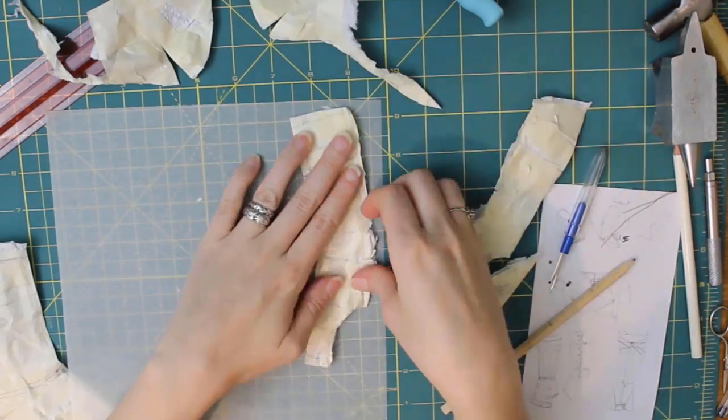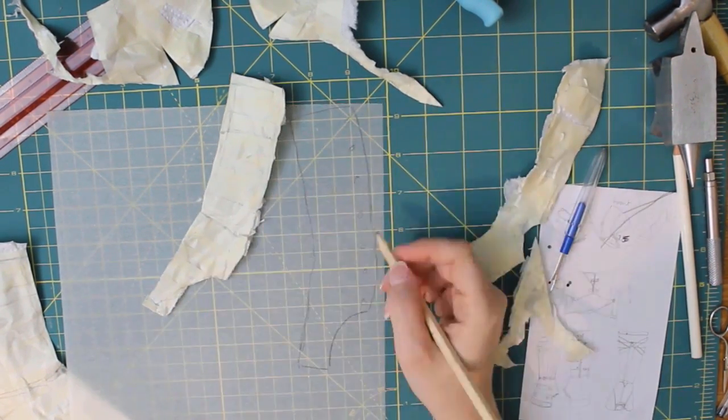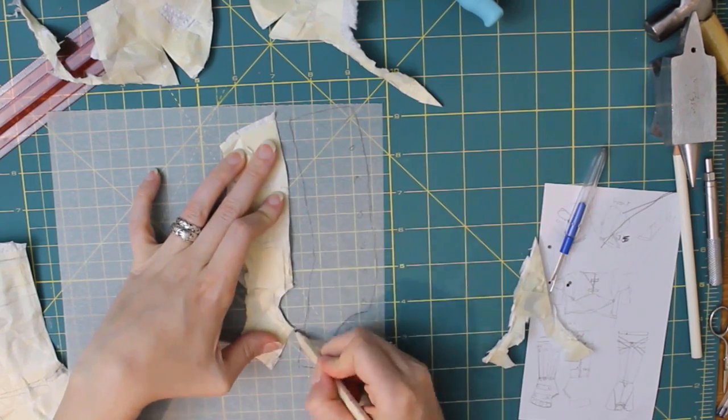Once all the pieces are cut apart, I copy all the pieces onto tracing paper. I'll transfer this to muslin and add a seam allowance to create the final pattern.